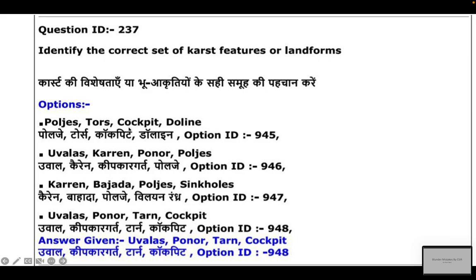Now we are left with two options. The first has Polje, Tor, Cockpit, and Dolines. The second has Yuvala, Karren, Ponor, and Poljes. Among these, Tor is incorrect — Tor never forms in karst landforms.